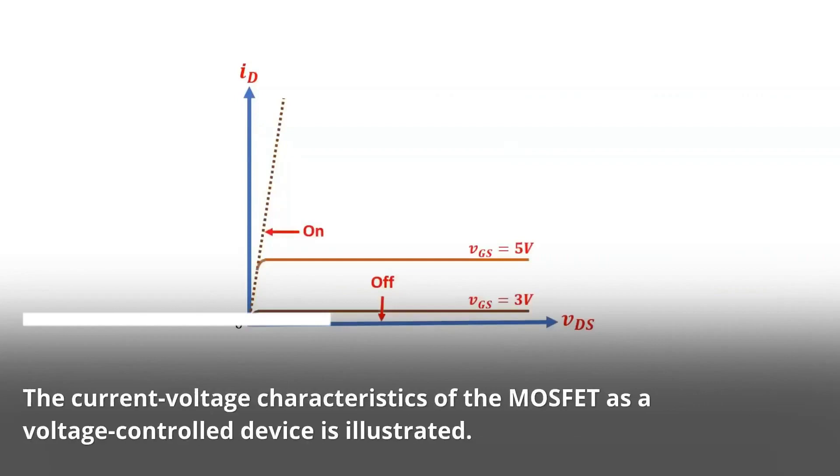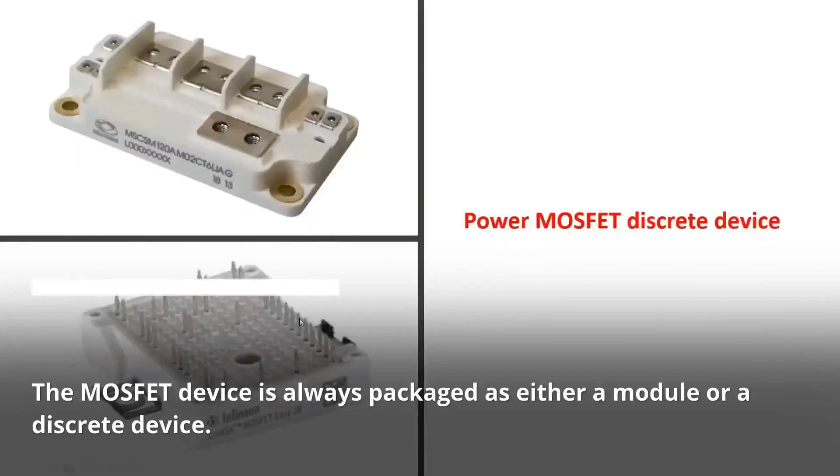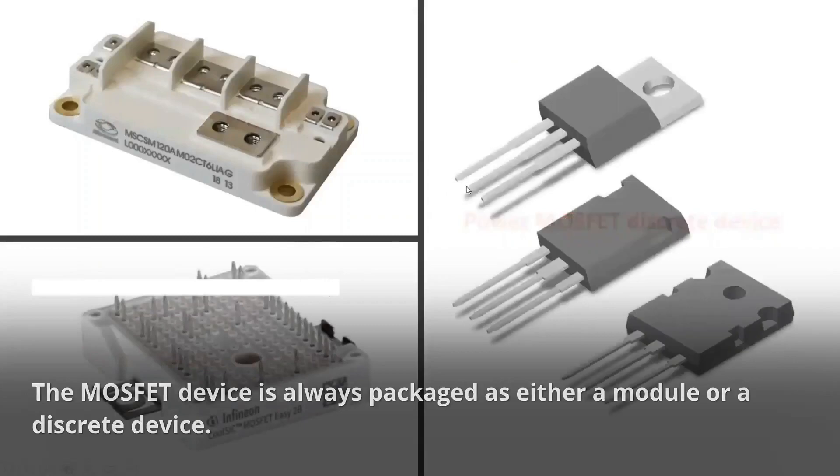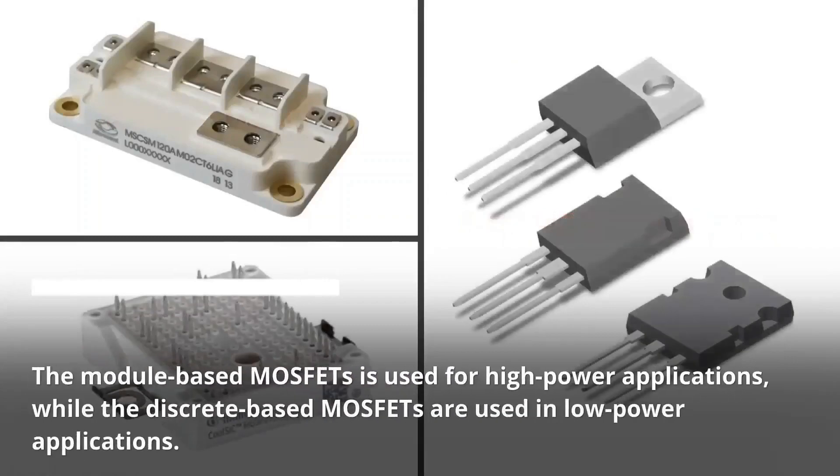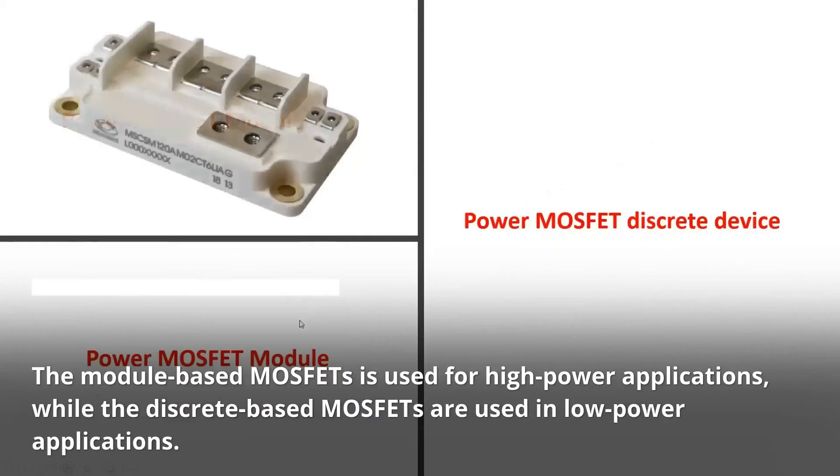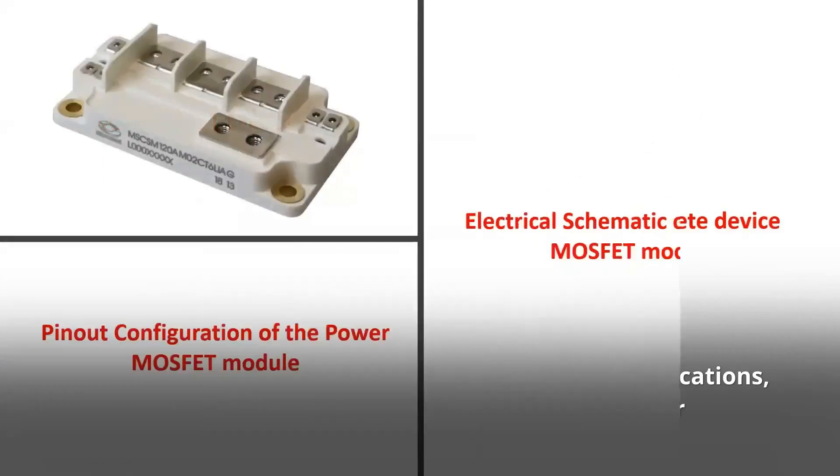The current voltage characteristics of the MOSFET as a voltage MOSFET device is always packaged as either a module or a discrete device. The module-based MOSFETs is used for high-power applications, while the discrete-based MOSFETs are used in low-power applications.